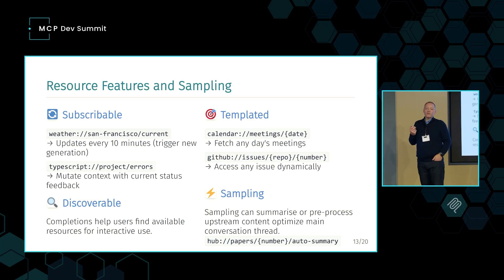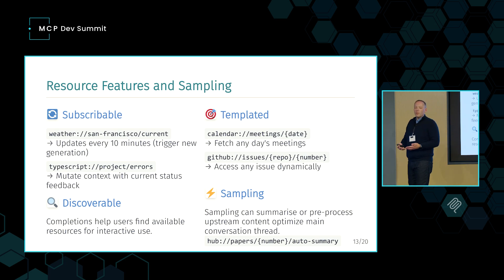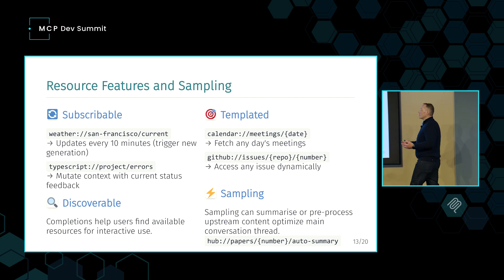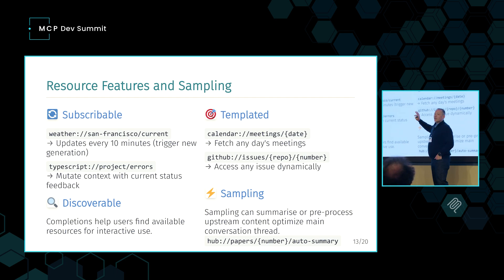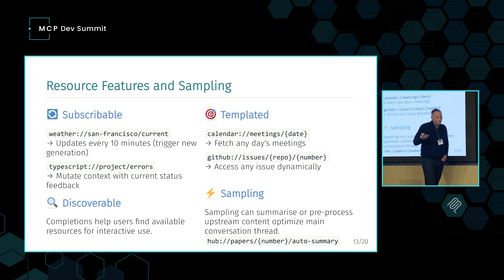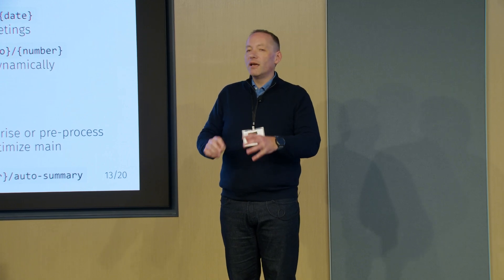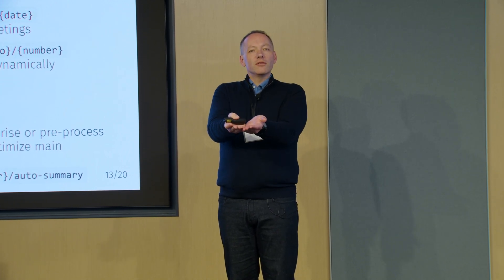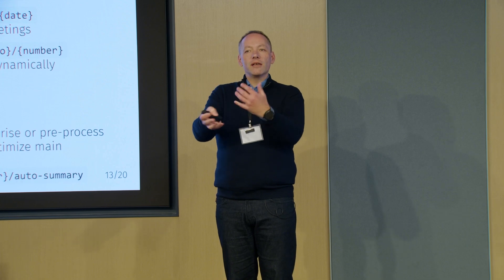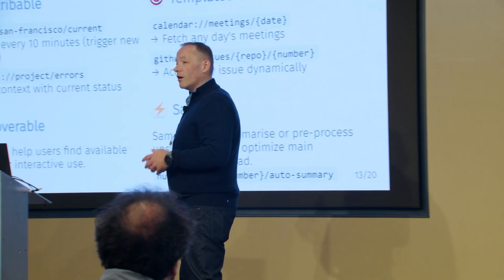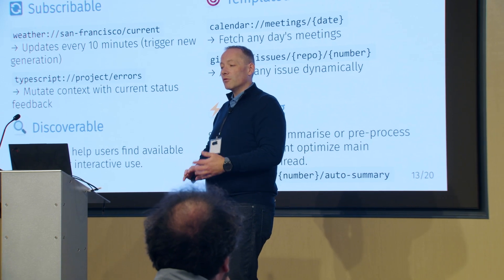Resources are also subscribable. If the MCP server supports it, we can ask for updates on a particular resource and use that to trigger a new generation. If my task list changes, for example, I can get a new report on it. If I'm building an IDE, I can have a resource embedded in context that mutates when it gets a subscription update, so my next generation contains that updated information — all quite possible with a well-crafted context window.